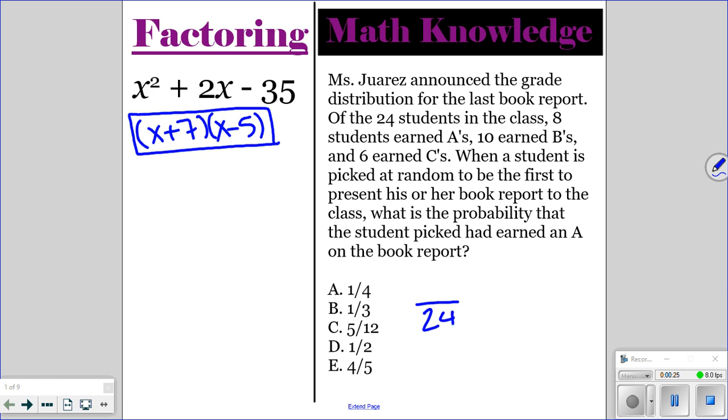So we have 24 total students. Eight students earned an A. So 8 out of 24 is one-third. So that would be your answer.